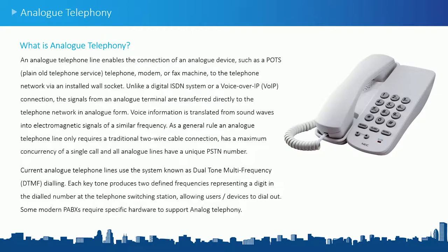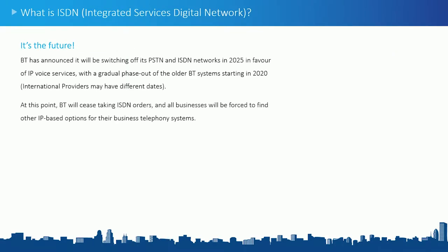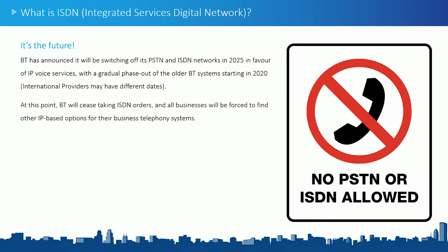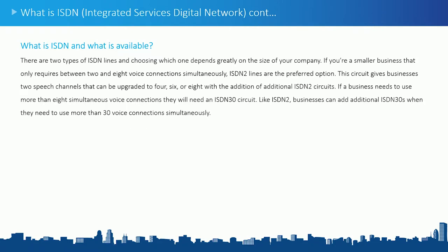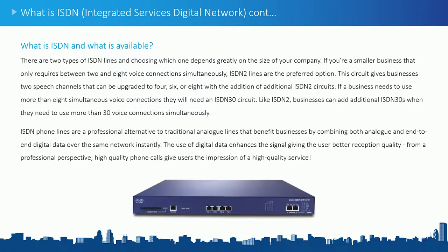These devices on your telephony network will be things like fax machines or credit card lines. As for the future of ISDN and analog lines: in the UK, BT have announced — as of the last couple of weeks — that in 2025 they will be switching off ISDN lines. In 2020 they will stop taking orders for ISDN lines, and you'll have to start using IP-based options, meaning your phone systems will have to start using IP-based telephony.